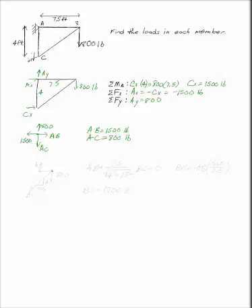Now if I take the joint at B, I know that I've got my 800-pound external load in AB and BC, which has to act along the member, so I'm going to have a slope of 4 over 7.5.